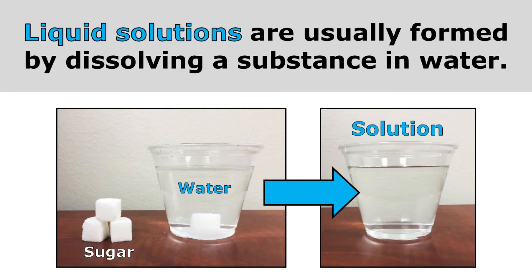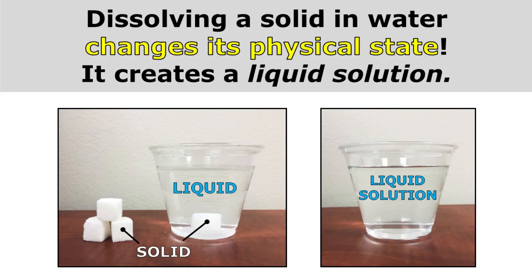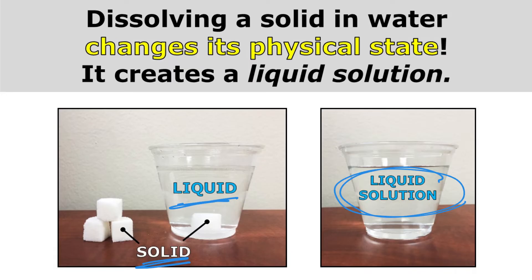Liquid solutions are usually formed by dissolving a substance in water. You can see that we have our sugar — we put some sugar in the water, and after the sugar dissolves, we get our solution. Dissolving a solid in water changes its physical state and creates a liquid solution. We started with solid sugar, and that solid sugar dissolved in the liquid water, and we ended up with a liquid solution. The solid sugar, once it dissolves, takes on the properties of that liquid — the water — and it becomes part of a liquid solution, going from a solid to part of a liquid solution.